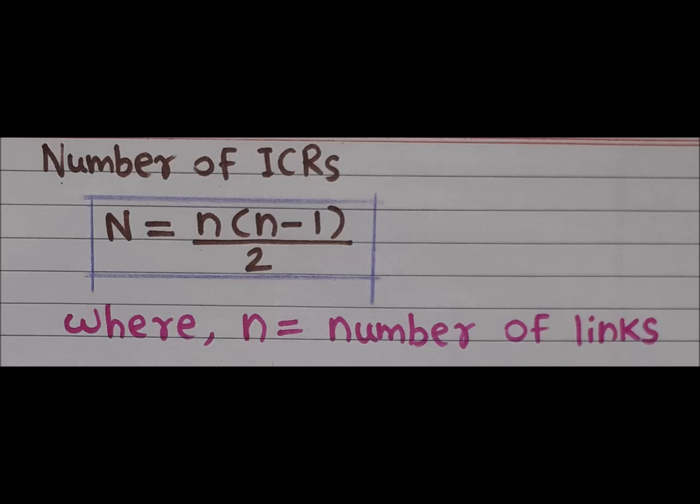In the last video we obtained the relation for number of ICRs in a mechanism: n equals n(n-1)/2, where n is the number of links in the mechanism. In this video we will discuss how to write these ICRs.